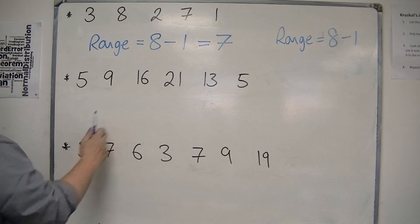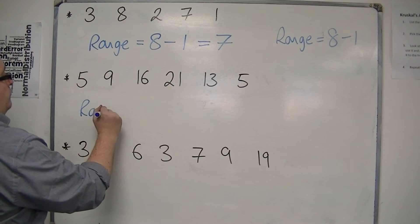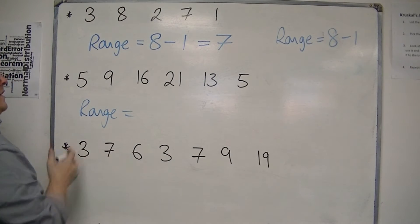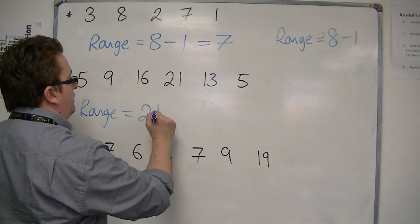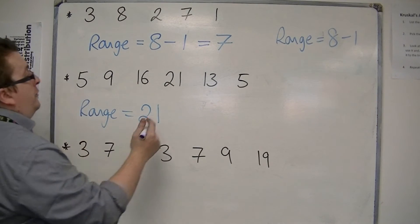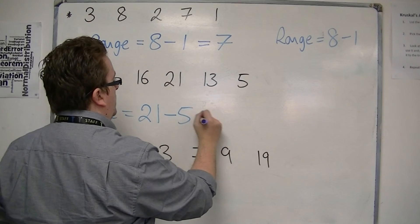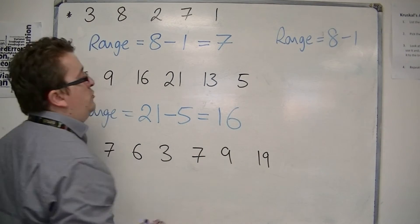In our second example, we have the largest number is 21, and the smallest number is 5, and so the range is 16.